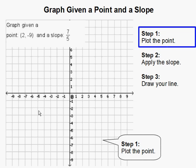Step 1. Plot the point. I'm going to plot the point given 2, negative 9. That is 2 on the x-axis and negative 9 on the y-axis, which creates this point.